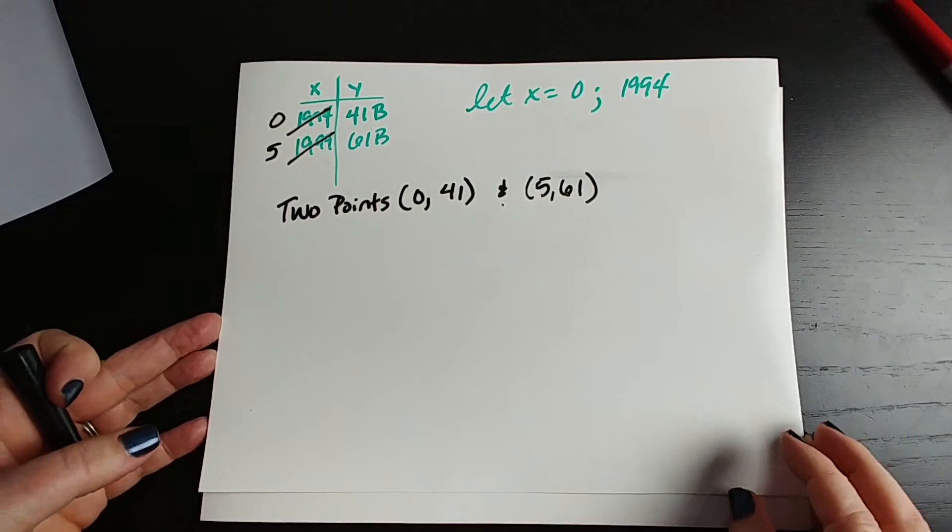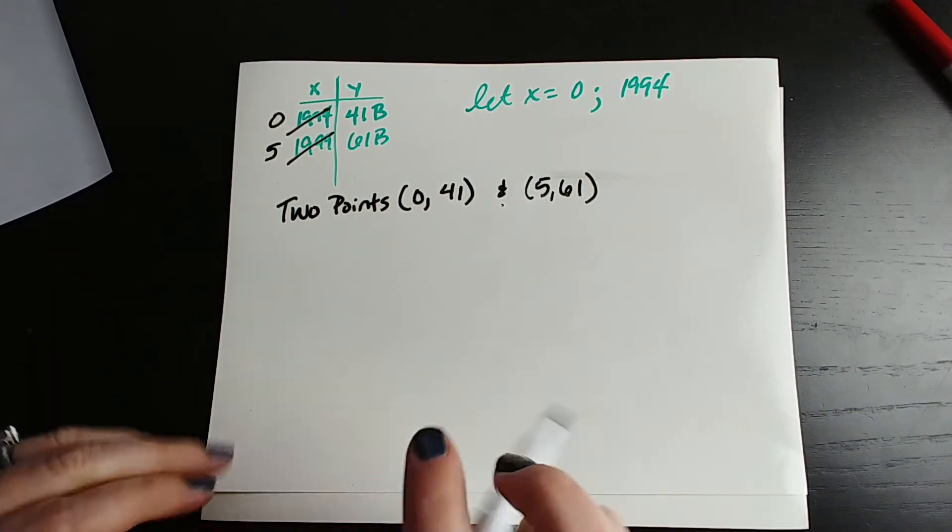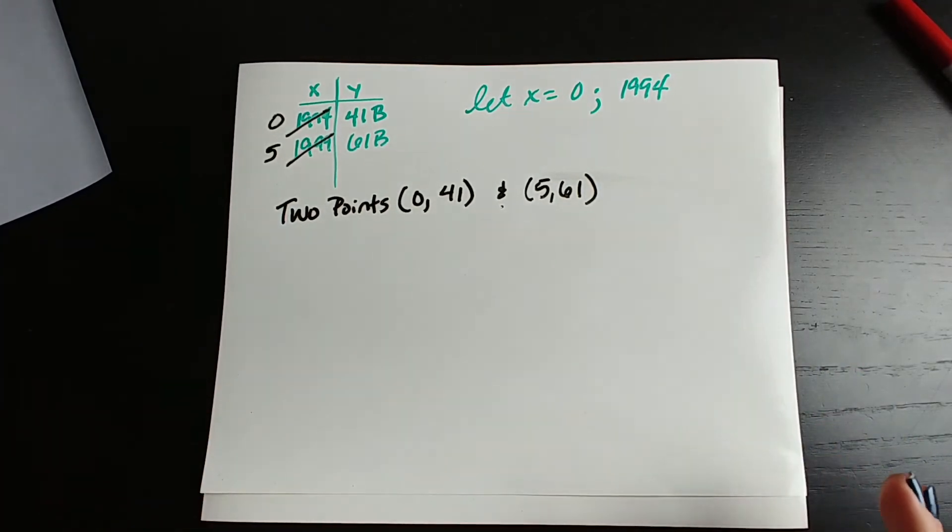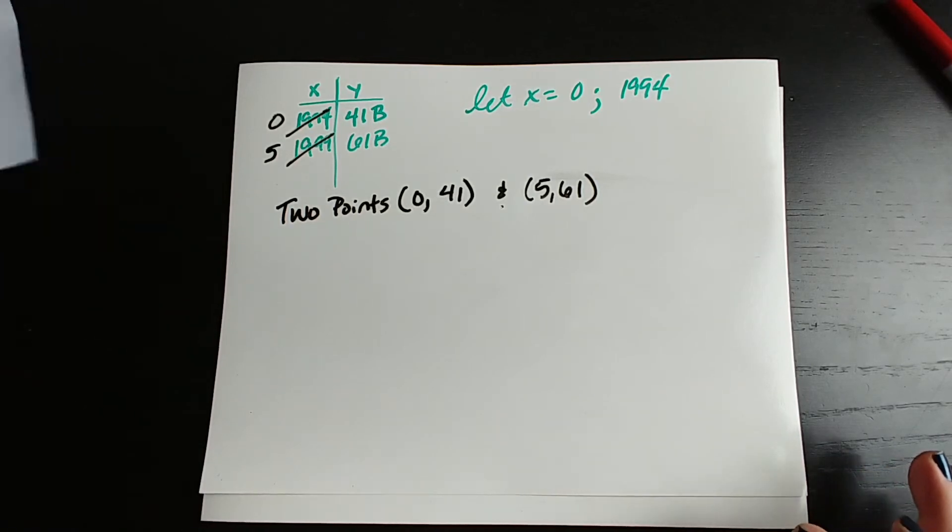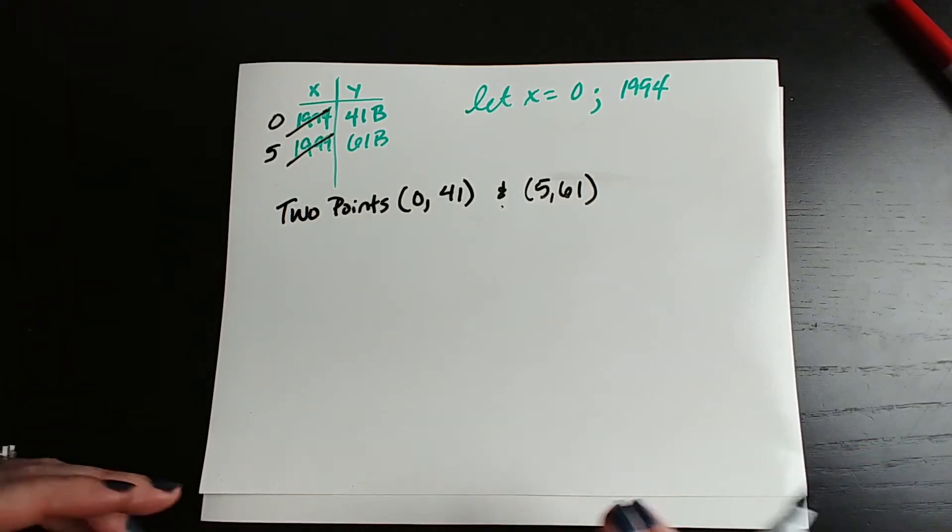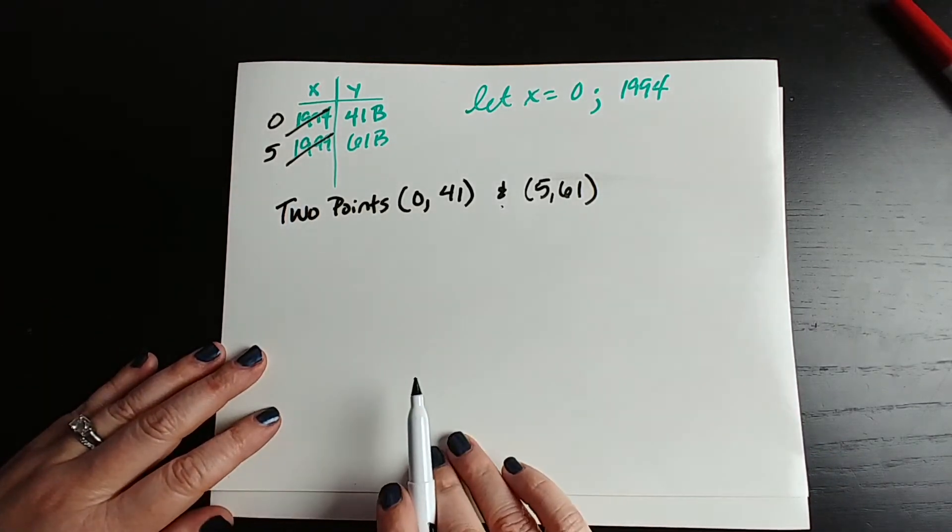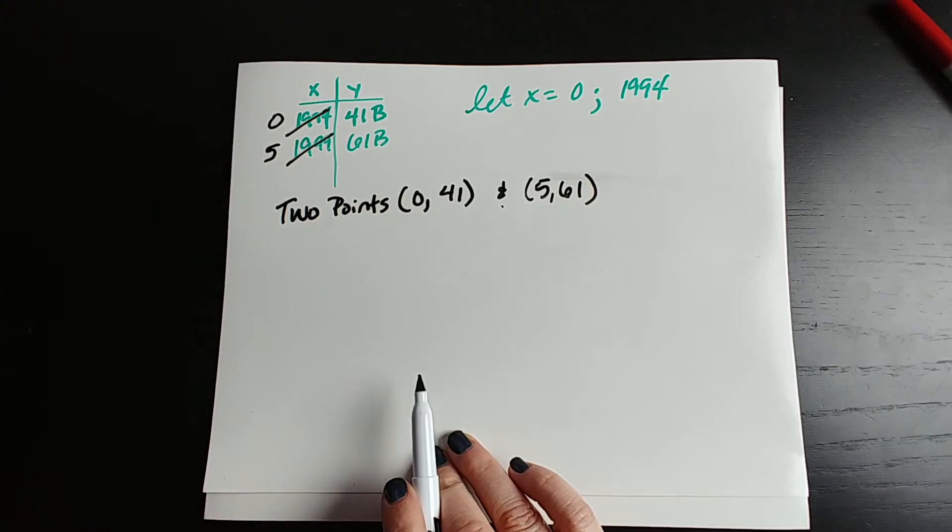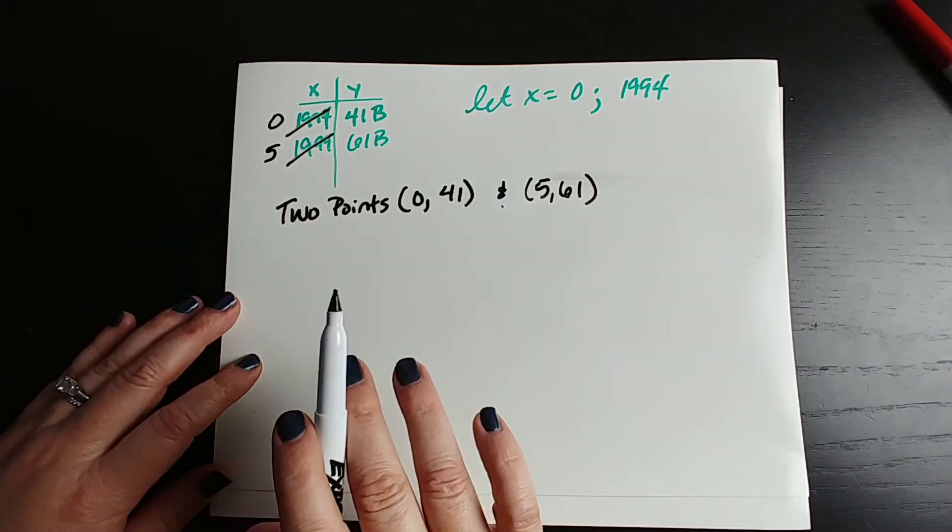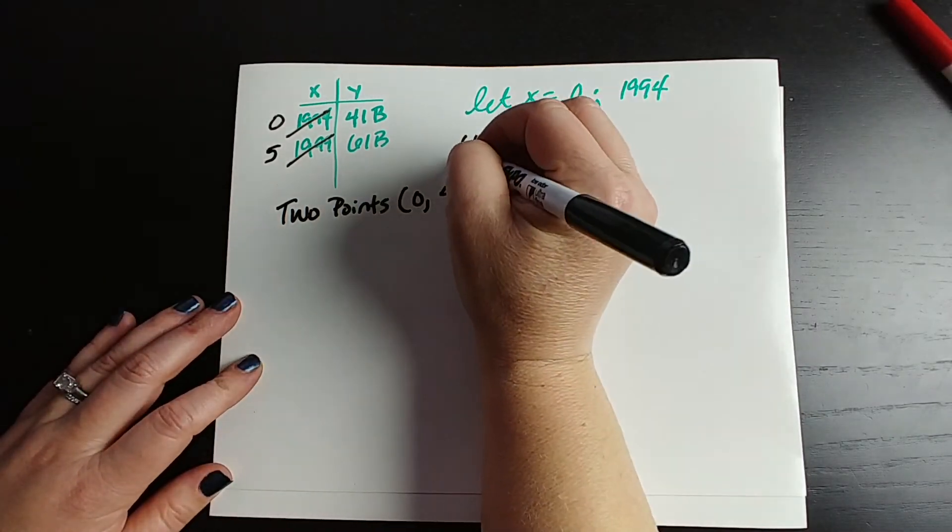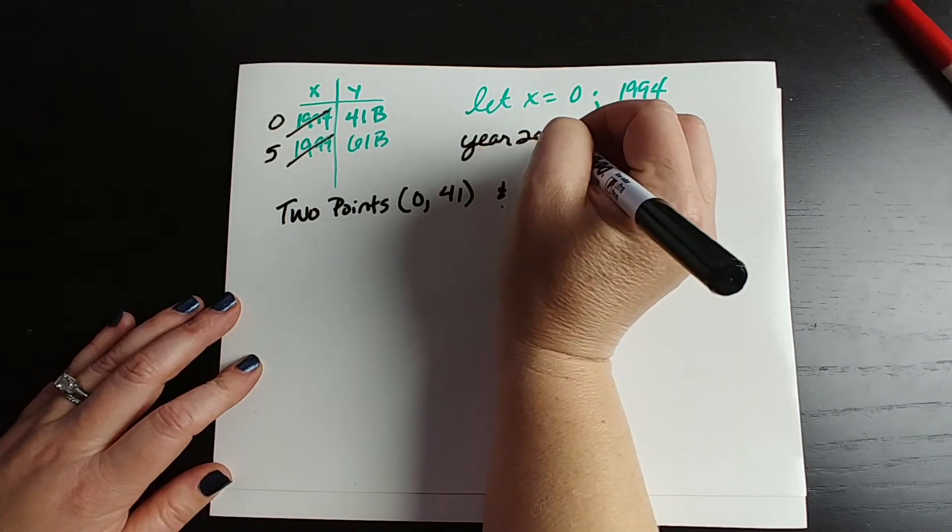Now remember, this is an approximation because it's a word problem, but really that's the heart of this. All they're asking us to do is find the linear equation that these two points go through, whether it represents this scenario, and they also want us to look at the year 2000.